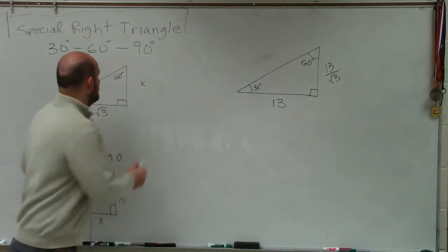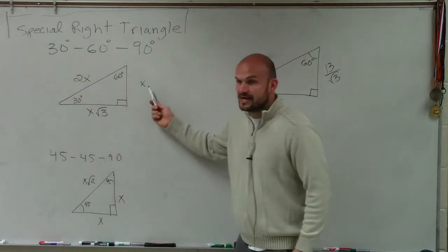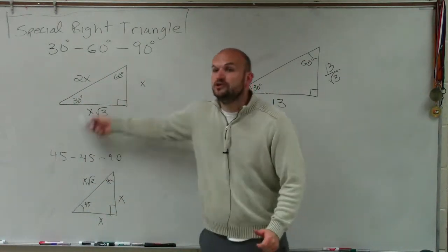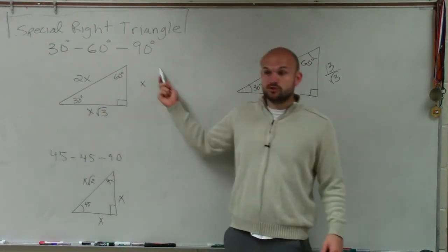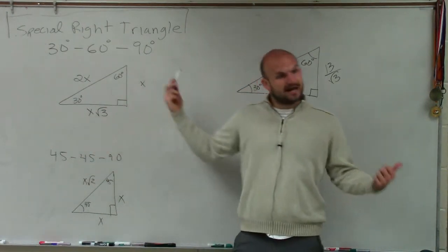So remember, listen, when we look up here, if I was giving you this length to find the other leg, you'd multiply by the square root of 3. So if I give you the larger leg and I say what's the shorter leg, you'd have to divide by the square root of 3.